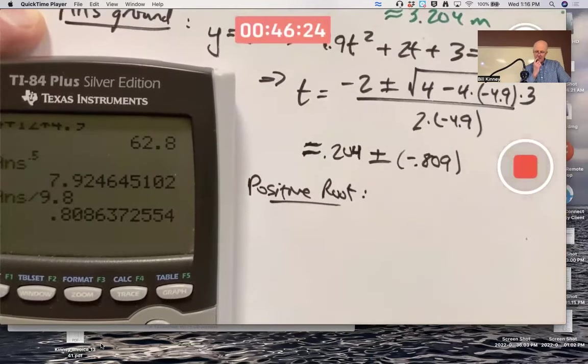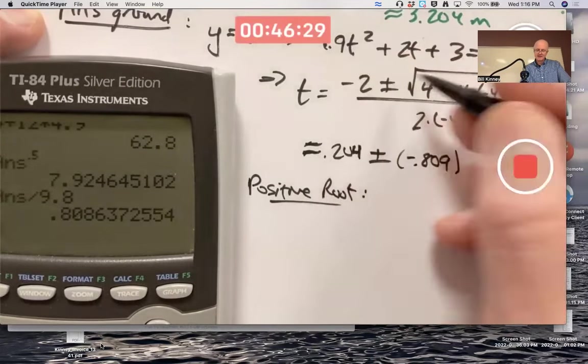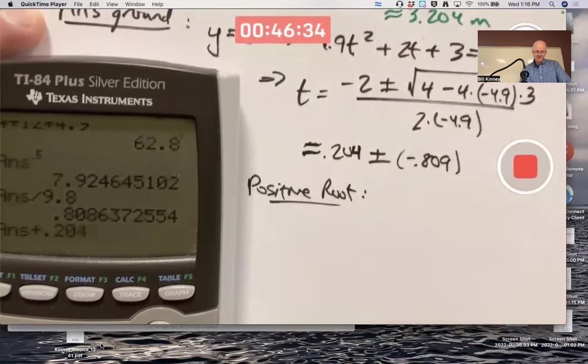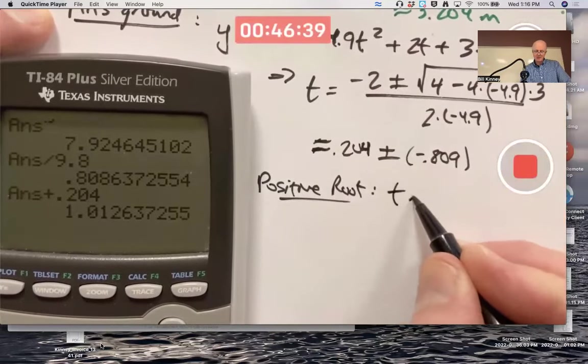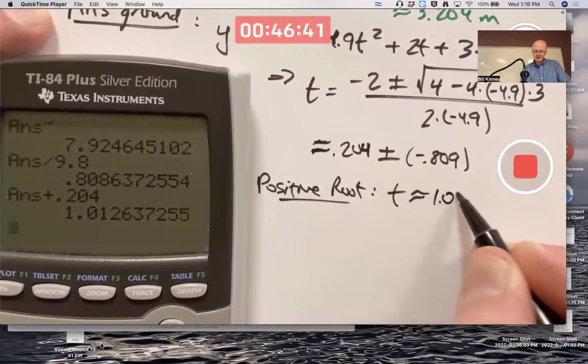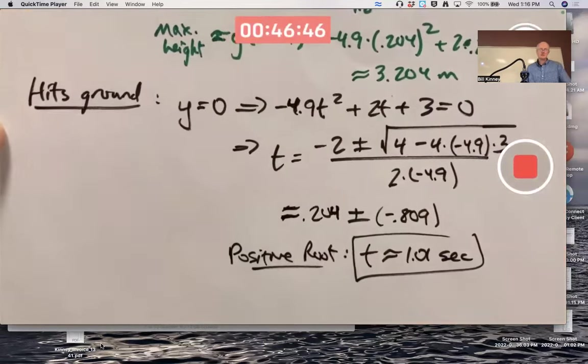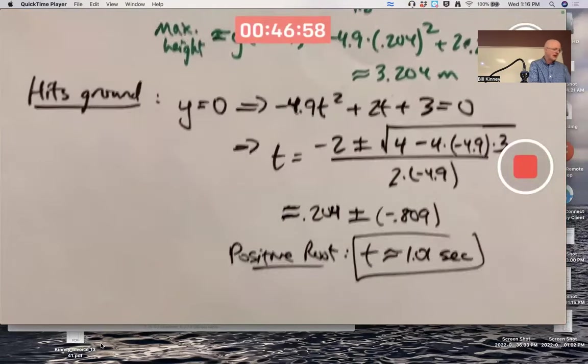It's going to be 0.204 plus 0.809. Looks like it's about 1.01. That's the time when it hits the ground. So I'm giving it a little push from right about here. In about one second, 1.01, that's when it hits the ground. That would be a practical application.